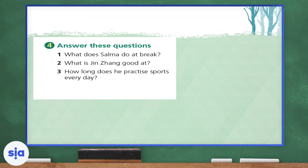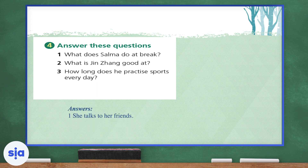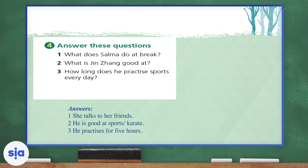Now we're going to exercise four. You can always go back to the text to reread — never feel uncomfortable when you're unsure of a question. Please reread the text more than once. Question one: What does Salma do at break? Salma talks to her friends. Question two: What is Yin Zhang good at? He is good at sports or karate — both answers are correct. Question three: How long does he practice sports every day? He practices for five hours. Always write your answers, pause, and check.